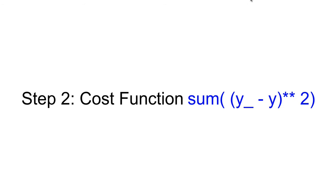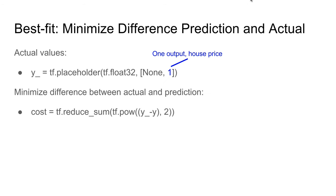Next, we have to create the cost function. We need actual house prices and we are going to store them in a placeholder, in this case y_underscore. The cost function we can create using operators such as tf.reduceSum and tf.power (power of 2, that is a square), which is the difference between y_underscore, the actual value, and y, the predicted values.